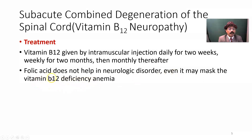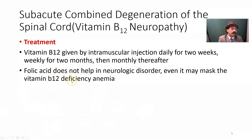We should first give vitamin B12, then we can give folic acid only if the megaloblastic anemia is caused by folic acid deficiency. Folic acid should not be given first because it can mask vitamin B12 deficiency anemia, and the neurological symptoms may be aggravated due to the continued lack of vitamin B12.